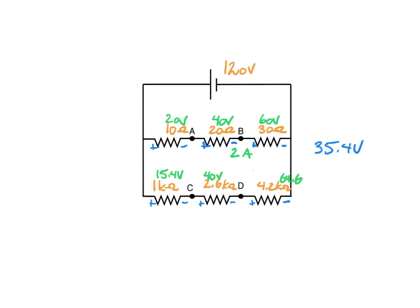That determines the voltage drop at any point. Let's do one more. Going from B to C, I drop off 40, drop off 20, then pick up 15.4, and end up with negative 44.6 volts because I dropped off more than I picked up.